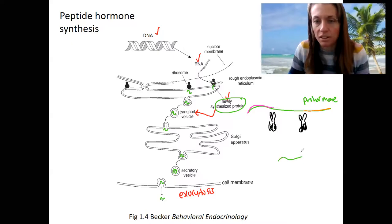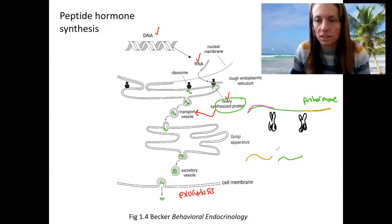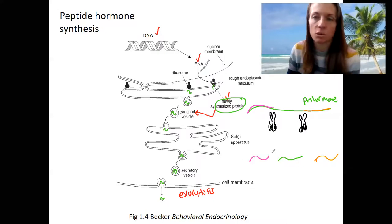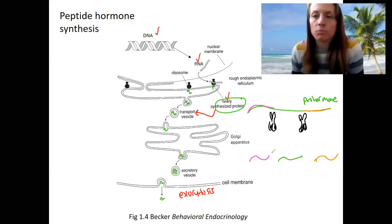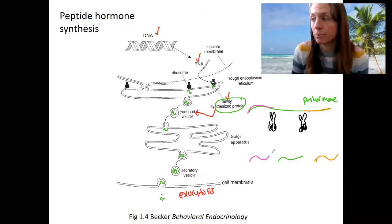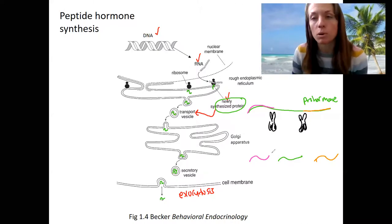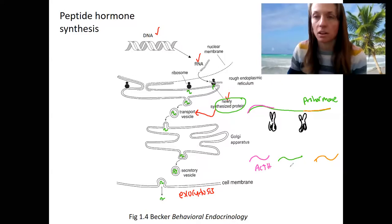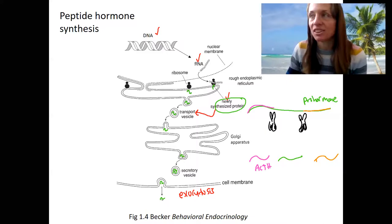So in the end we've got — in this example — three different final hormones produced from one gene, so they're regulated together. Just know that these are produced first as pro-hormones that need to be further processed. We won't look at this a whole lot more, but ACTH is actually an example of this. Okay, last thing for peptide hormones is their action on the cell.